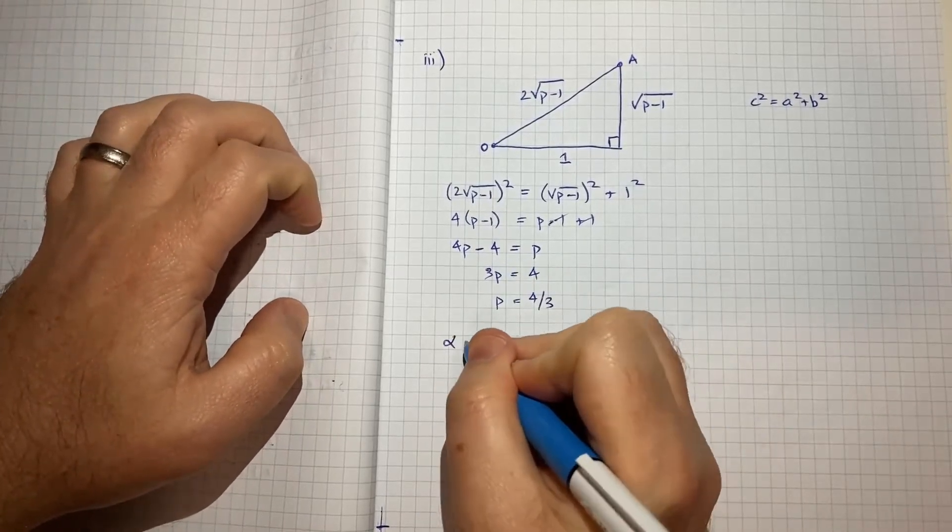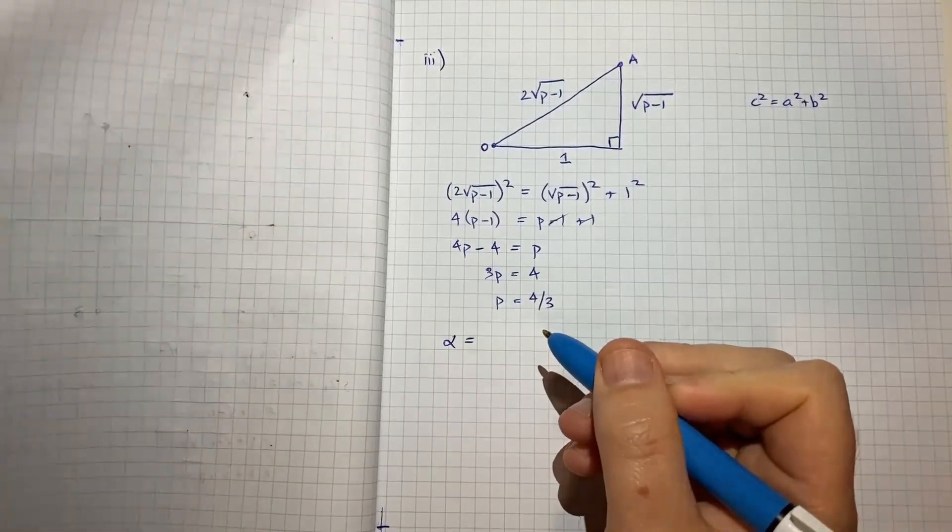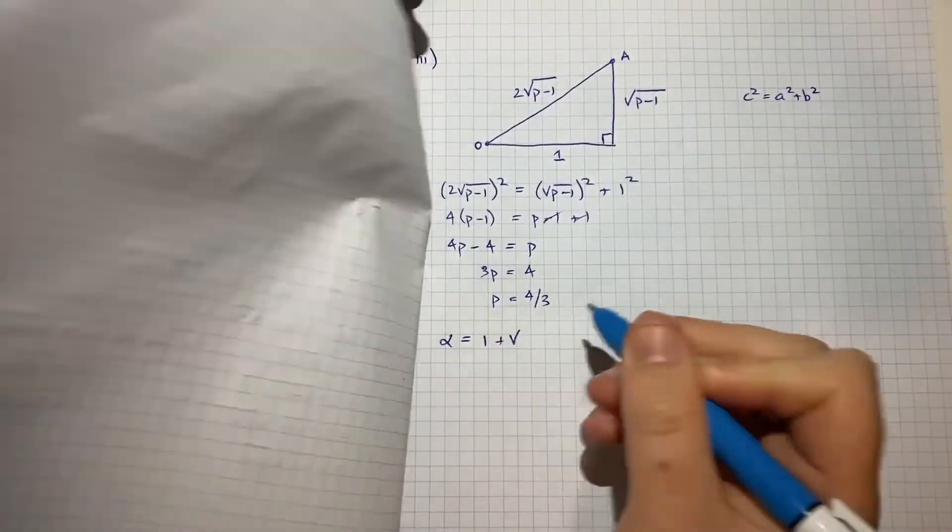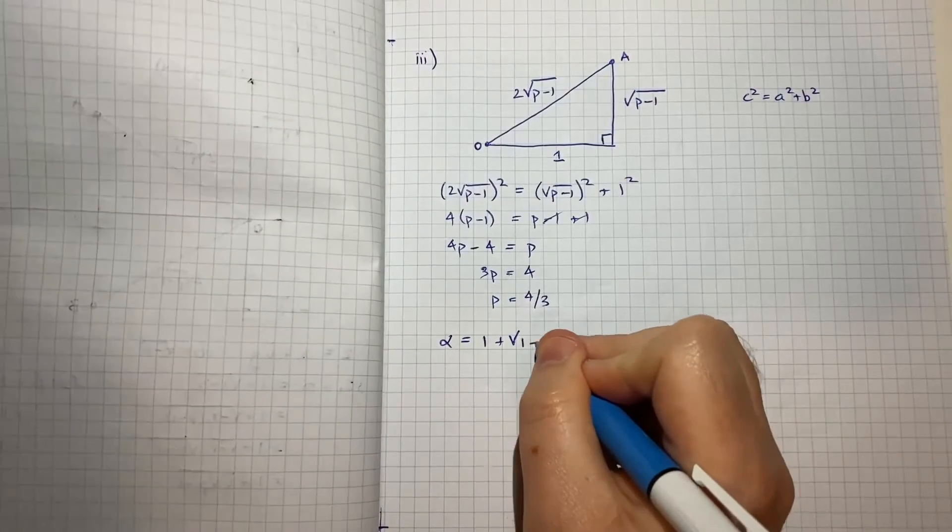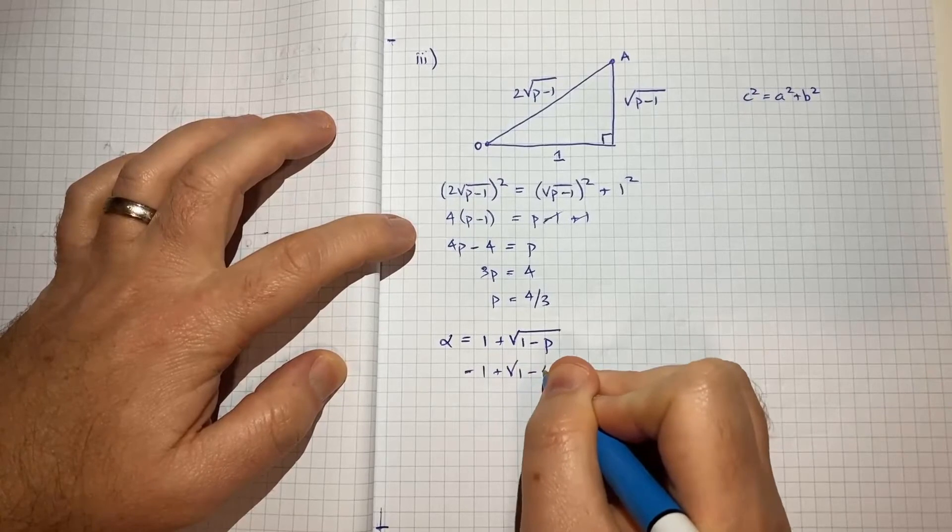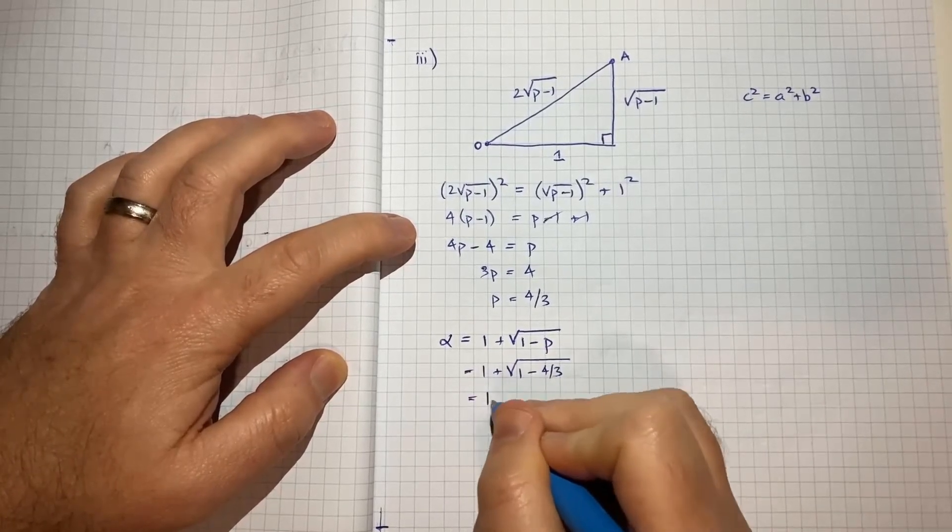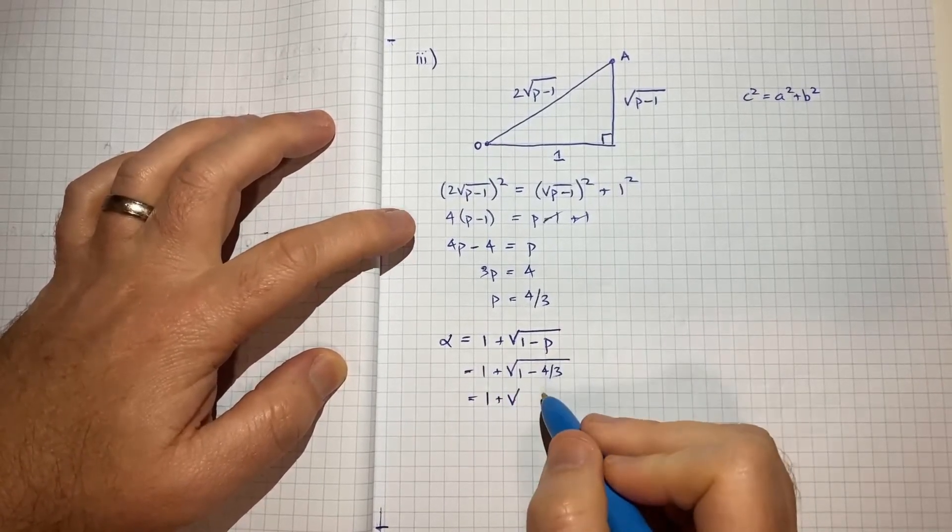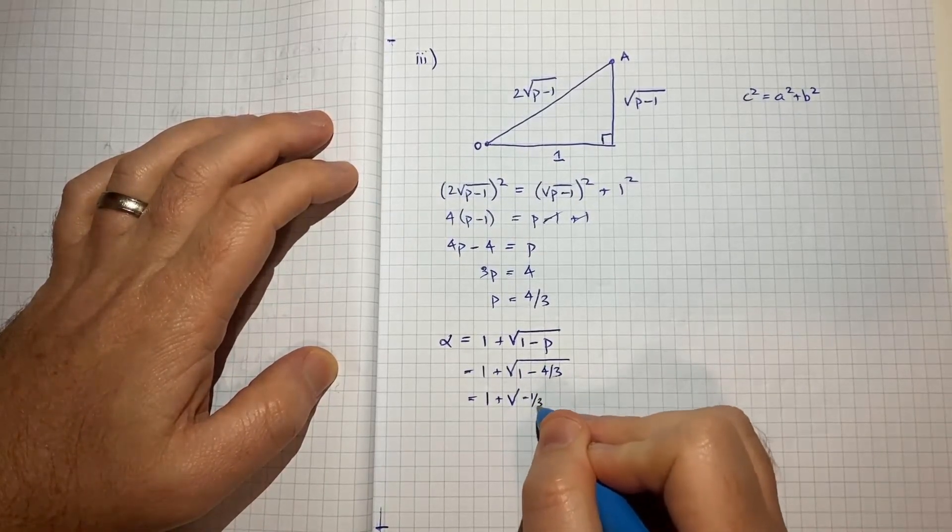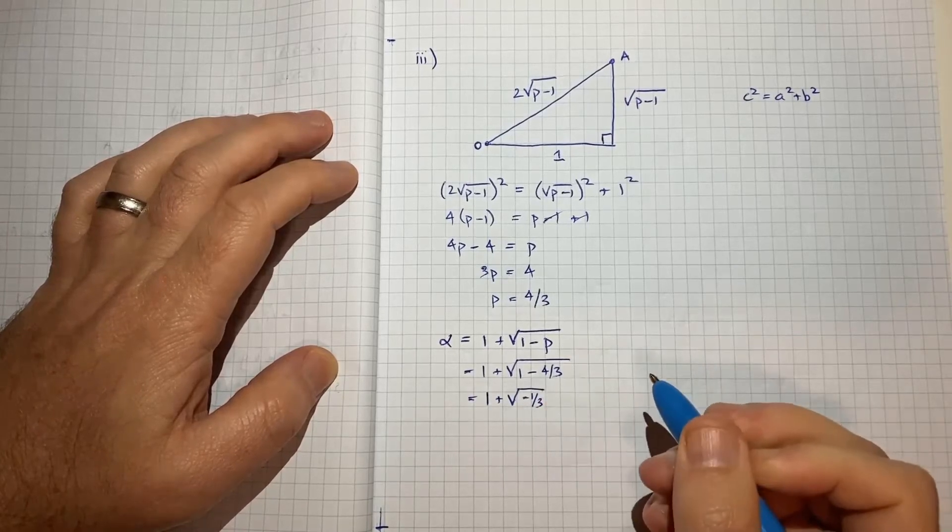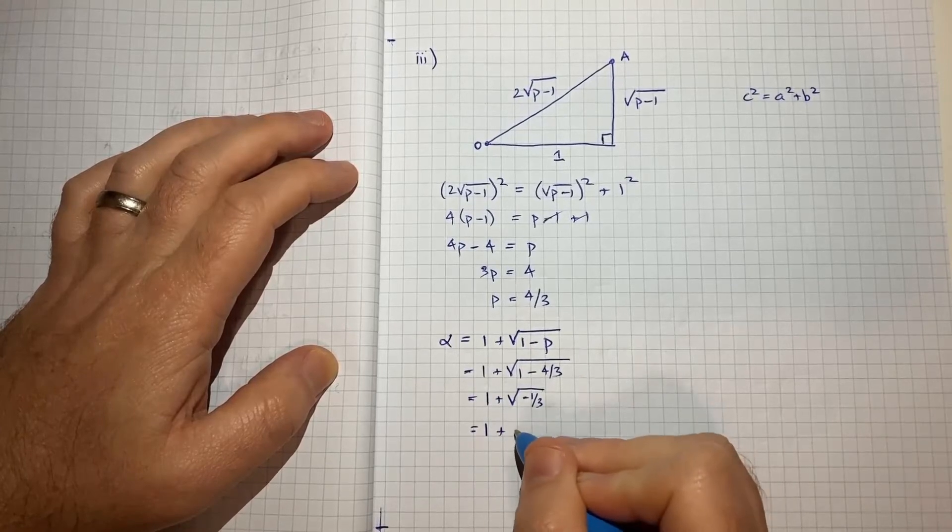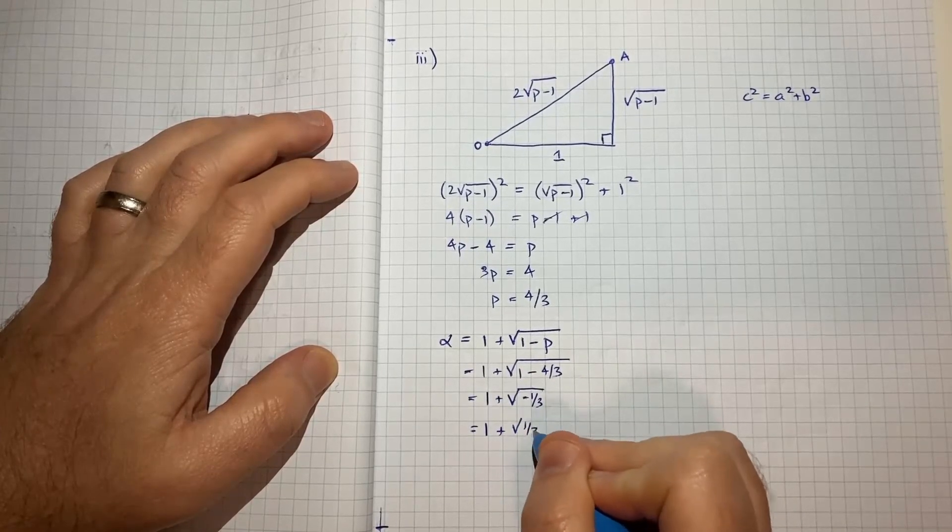So now we'll go alpha is equal to, let's make sure I get this right, 1 plus the square root of 1 minus P, which equals 1 plus the square root of 1 minus 4 on 3, which is negative 1 on 3. Which equals 1 plus the square root of negative 1 on 3. And we could leave it there or we could go and write 1 plus root 1 on 3 I, if we want to put it in that format.